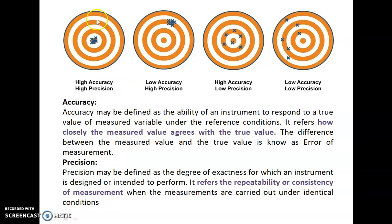In the first diagram, it is highly precise and highly accurate — it is on the target, so it is highly accurate, and all the readings are the same, so it is highly precise. In the second diagram, it is low accuracy because it is not on the target, but high precision because the instrument gives the same reading again and again.